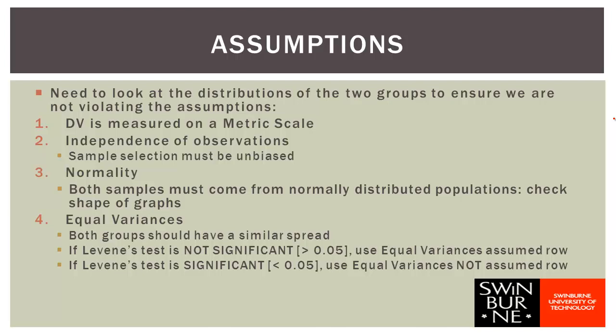The last assumption is equal variances — the normal independent samples t-test requires the two groups to have very similar spread. In the SPSS output, it produces two lines: one for if equal variances are assumed, and one for if they are not. Whilst this is an assumption, it's not a big deal because the only thing that changes is which row of our SPSS output we read from.